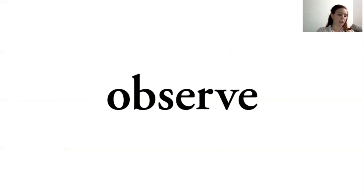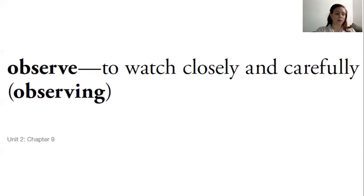O is a vowel. B is a consonant. S is a consonant. E is the vowel controlled by consonant R. Then V is a consonant and the E at the end is a vowel — it will not make a sound. So 'observe' has two vowel sounds; that O and that E make a sound. Observe means to watch closely and carefully.